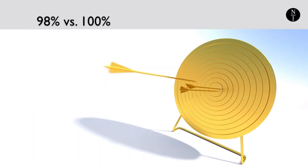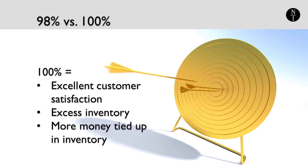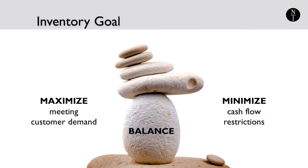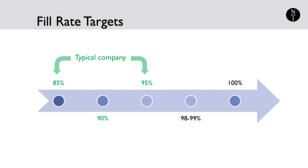This company has a target fill rate of 98%. You may wonder why they don't aim for 100%. While 100% is great for customer satisfaction, it is usually indicative of having surplus inventory — and inventory is cash tied up that a company can't use for something else. The inventory goal is to have enough of the right items in stock to meet customer demand while minimizing cash tied up. On average, companies have a fill rate of 85 to 95%, while top performing companies manage 98 to 99%.